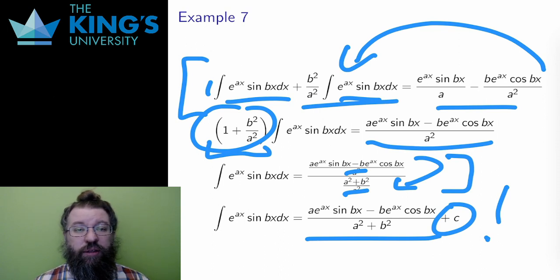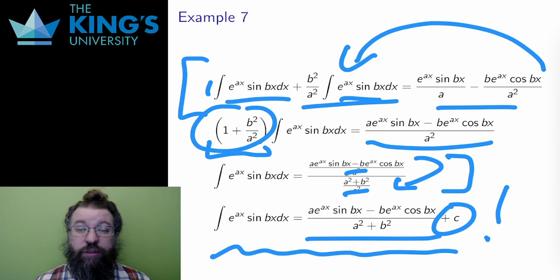All I have to do is add the constant of integration, and it's finished. And this is pretty neat, I think. I did integration by parts twice, which just brought me back to the original integral, but then I could solve for that integral, which, after all the algebra, actually gives me an antiderivative. This is the antiderivative of a product of an exponential and a sine function.